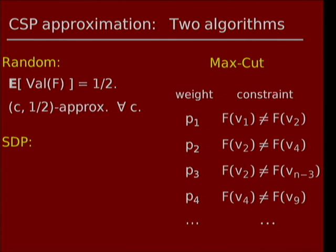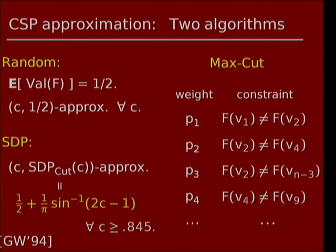What about the SDP algorithm? By definition it's a (C, SDP_{cut}(C)) approximation. Luckily this CSP is so simple that you can actually analyze this. This was done in the Goemans-Williamson paper: they showed the SDP algorithm always achieves at least 1/2 + (1/π)·arcsin(2C - 1) — at least if C is bigger than about 0.845, which is the solution to some trigonometric equation. This is always bigger than 1/2, so their algorithm strictly outperforms random. This was quite a breakthrough showing that SDP does quite well for MaxCut.